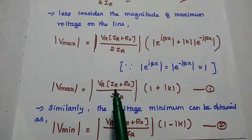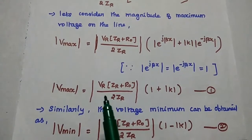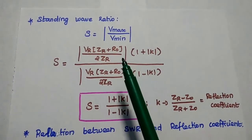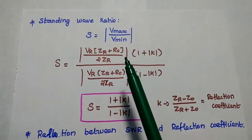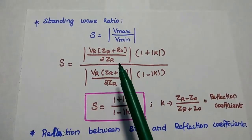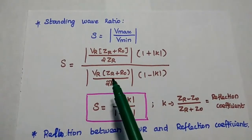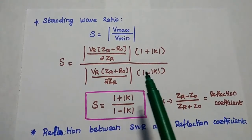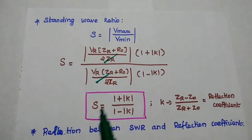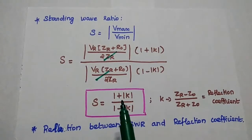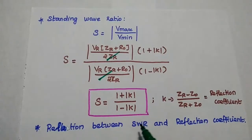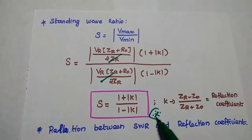Next, we are going to substitute the Vmax and Vmin values in the standing wave ratio formula. S is equal to Vmax by Vmin. Substituting Vmax and Vmin, we get modulus of Vr into Zr plus R-naught divided by 2Zr, into 1 plus modulus K, divided by modulus of Vr into Zr plus R-naught by 2Zr, into 1 minus K. These two common terms cancel, and we get the standing wave ratio S equal to 1 plus modulus of K divided by 1 minus K. This is the standing wave ratio formula — it is a very important one.